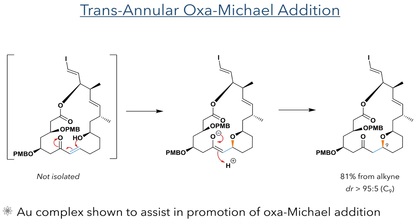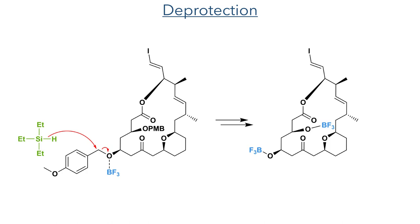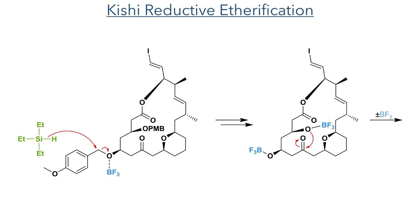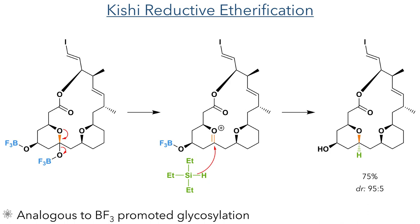With the macrolactone now formed, they set about installing the pendant functional groups. They first deprotected the PMB groups using boron trifluoride, a Lewis acid that activates the ether oxygen, and triethylsilane, which adds a hydride to this activated centre. These conditions also allowed for a Kishi reductive etherification to occur. The alkoxide formed by the deprotection of the PMB group added to the ketone, forming a hemiacetal that was activated by boron trifluoride. This allowed one of the oxygens to be eliminated together with the formation of an oxocarbenium, analogous to a boron trifluoride-promoted glycosylation. Triethylsilane then attacks this electrophilic centre, producing the cis-tetrahydropyran complex in a 75% yield with a dr of 95:5.